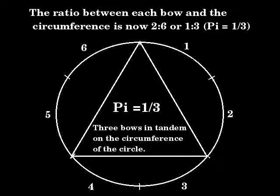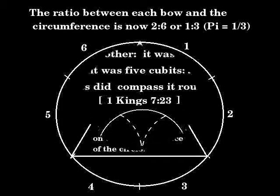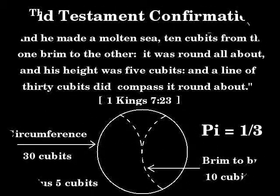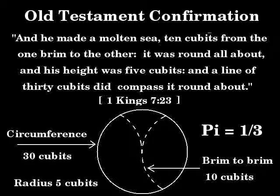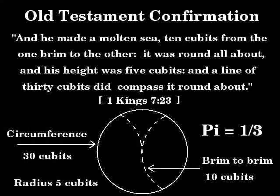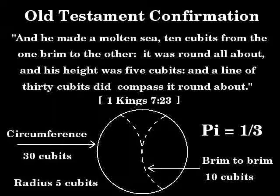Pi is one third. This value for Pi is confirmed in Kings 1, chapter 7, verse 23 of the King James Bible: 'And he made a molten sea, ten cubits from one brim to the other. It was round all about, and his height was five cubits, and a line of 30 cubits did compass it round about.' Notice that the diameter is 10 cubits and the circumference is 30 cubits — Pi is therefore 1 to 3.